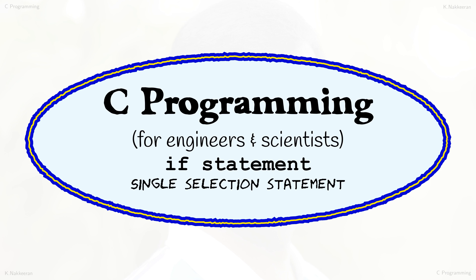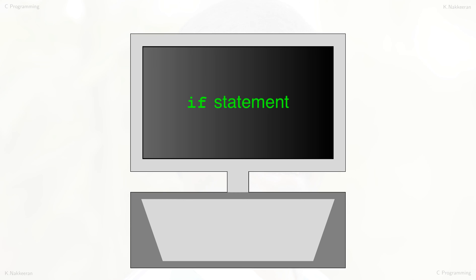Welcome to C Programming Lecture 5. So far, all the C programs we have looked into are written with statements that are executed one by one without any selection or repetition of any selected part of the program. This means the control of program execution goes from top to bottom without missing or repeating any part. We may require certain parts of the program code to be selected or not selected on a conditional basis. In this lecture we will look into the single-selection if statement that can help write C programs to select certain parts of the code only when a condition is satisfied.